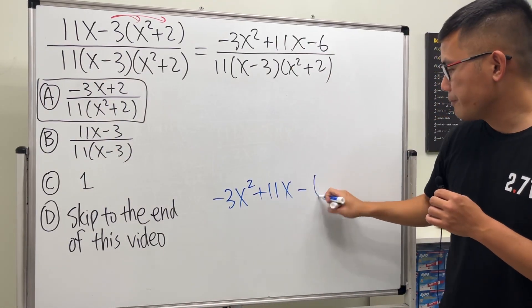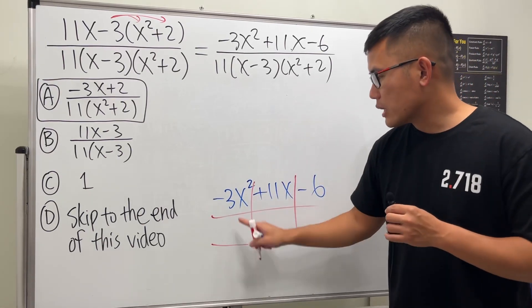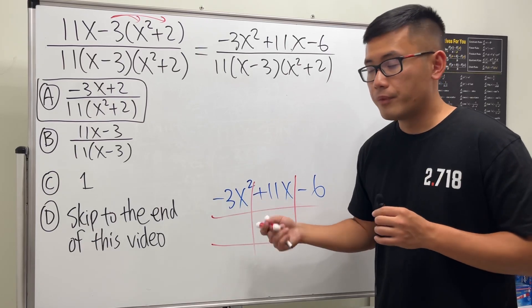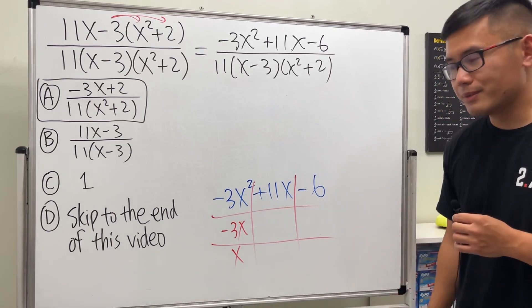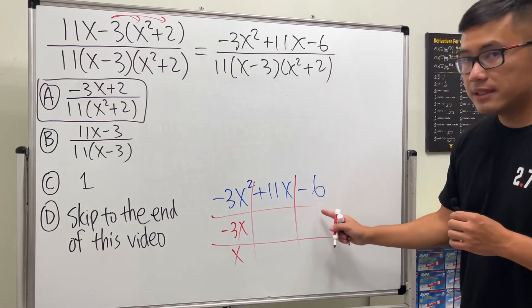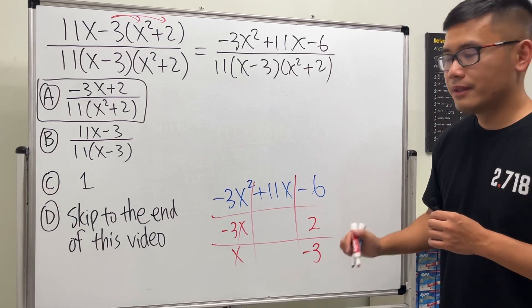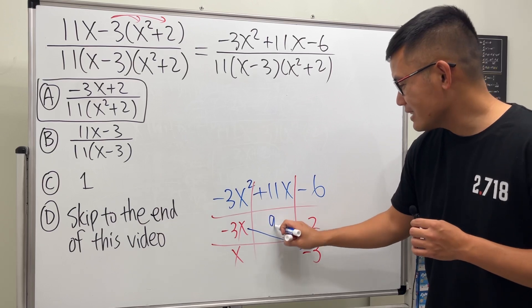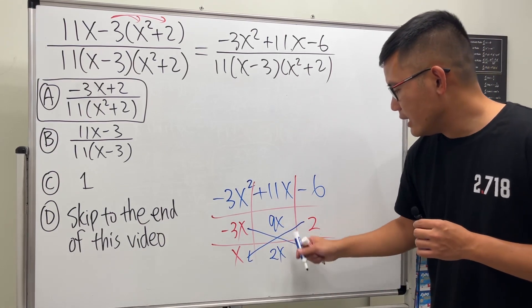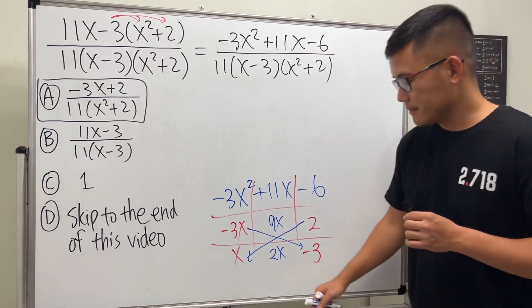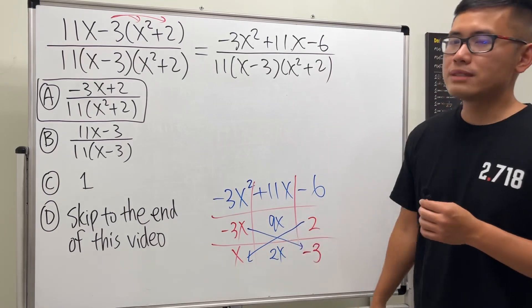So let's go ahead, one times that gives us -3x². We need -3x and x. Yeah it works because right here to get -6 I'm going to use -3 and positive 2. Put them in here because this times this will give us positive 9x, this times that will give us negative 2x. Together we do get the positive 11x right. So the tic-tac-toe method for factoring or the cross method for factoring.